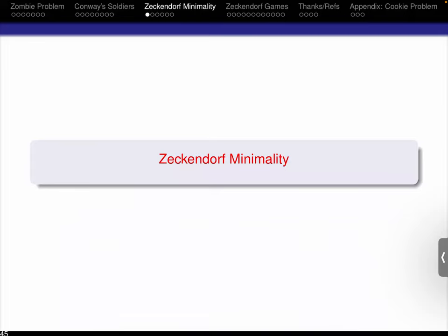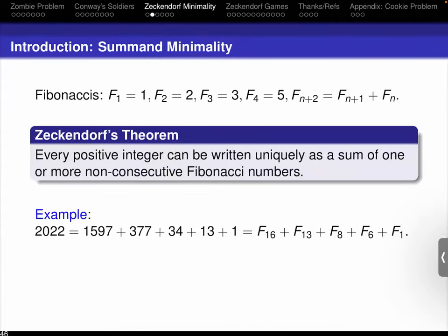There are a lot of ways to define the Fibonacci numbers. I'll define them as 1, 2, 3, 5, and so on, where each one is the sum of the previous two. An absolutely beautiful theorem due to Zeckendorf is that every positive integer can be written uniquely as a sum of non-consecutive Fibonacci numbers. So for example, if you take 2022, here is its decomposition. The simplest way to prove this is to use the greedy algorithm: take your number and subtract the largest Fibonacci number you can, then look at what remains and subtract the largest Fibonacci number you can.